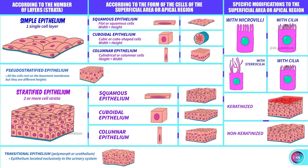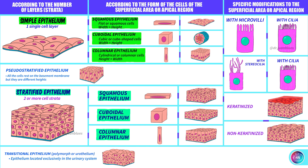We saw that epithelial lining tissue can be classified as simple epithelial tissue or stratified epithelial tissue, and these can be subclassified further according to a series of criteria. Today we will look at simple epithelial tissue, its different forms and the most common location for each one. Let's begin.